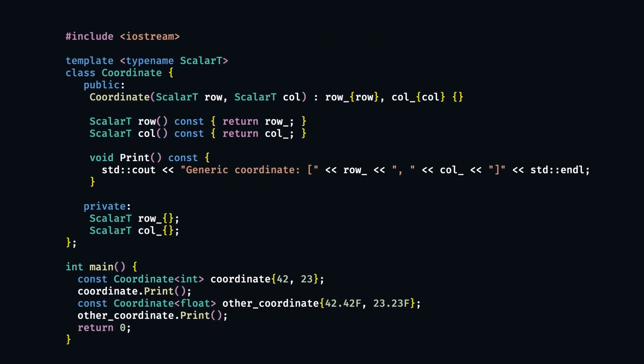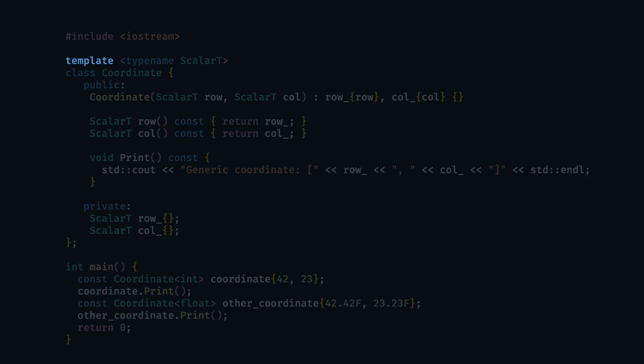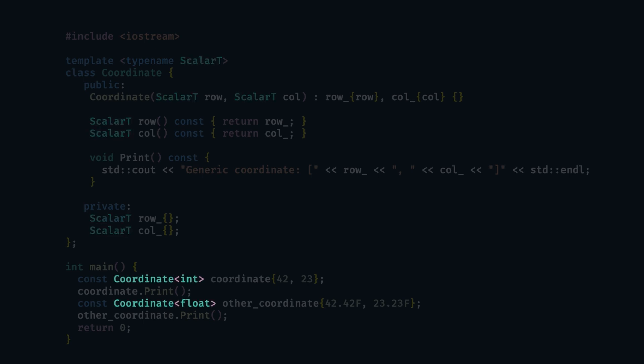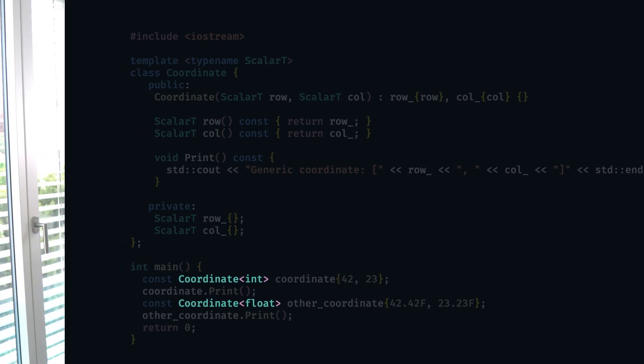We can replace our coordinate and float coordinate with a single class template coordinate. A lot of things here are just like what we saw before for function templates. We declare the class template by prefixing our class with the word template, provide any number of template parameters — here just one, ScalarT — prefixing it with the keyword typename or class. We can use our template parameter ScalarT anywhere in our class just like we would use any other type. When we instantiate an object of our class, we provide the type that we want to use, which triggers implicit template instantiation. Stay tuned for explicit template instantiation too.